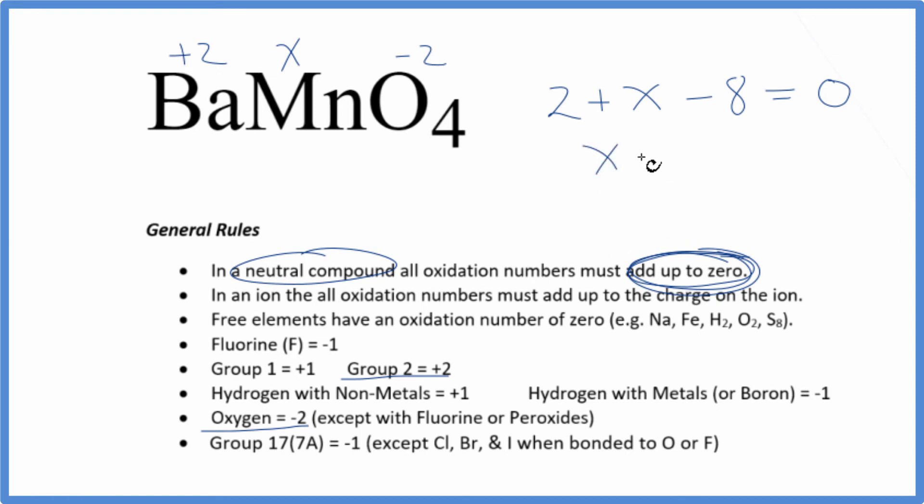Now we just solve for X. X minus 6 equals 0. Add 6 to both sides. X is positive 6.